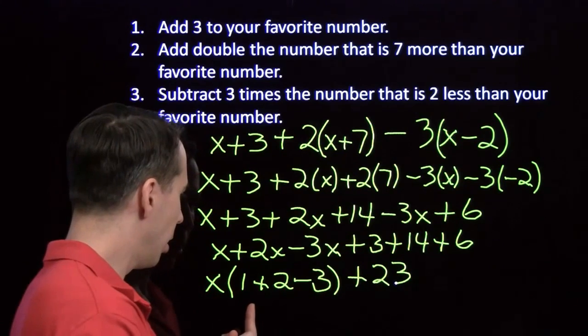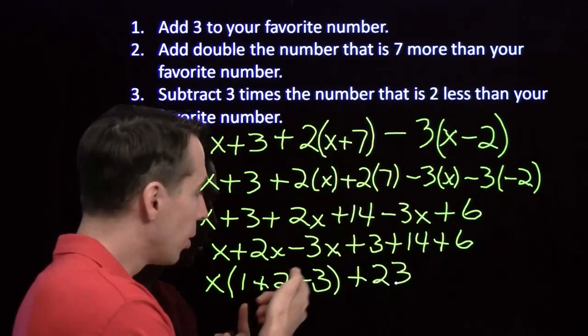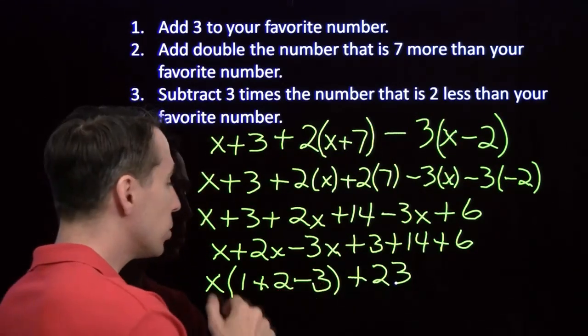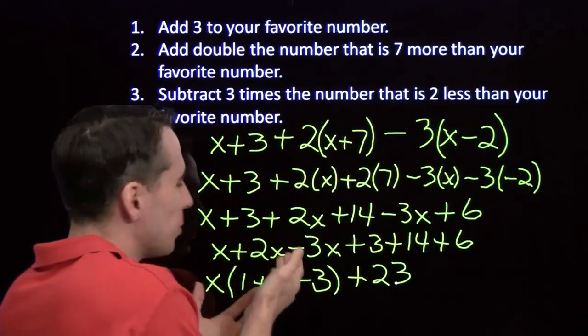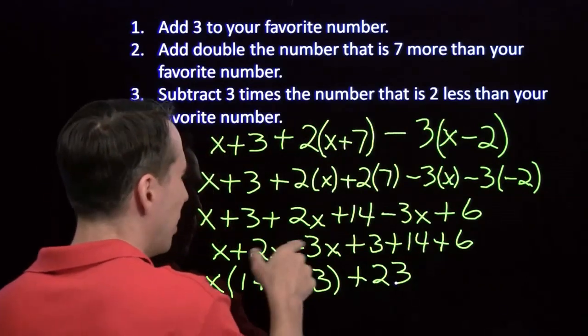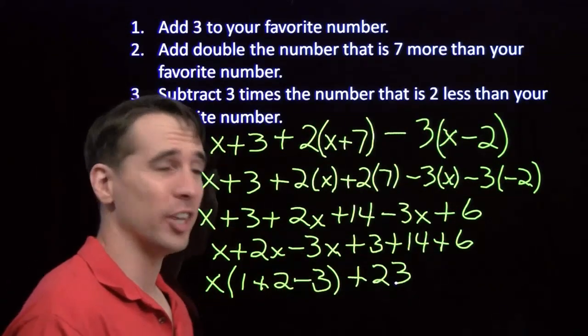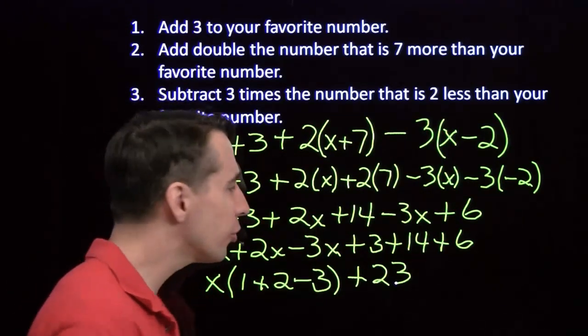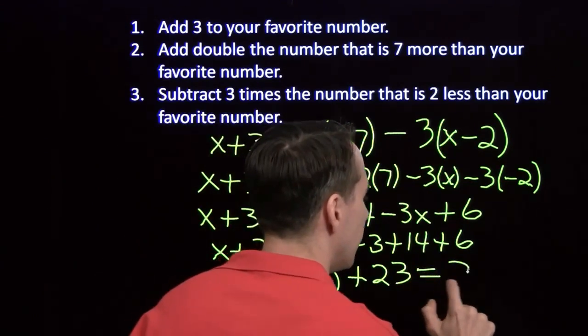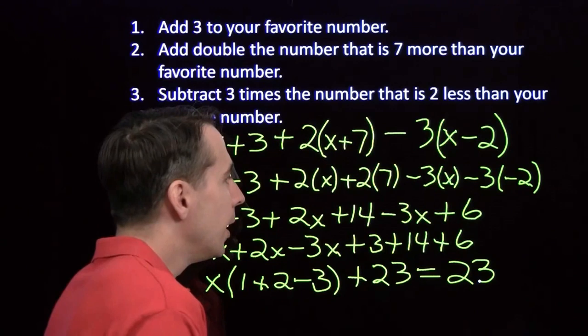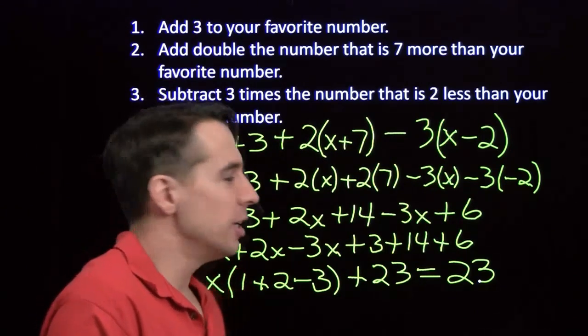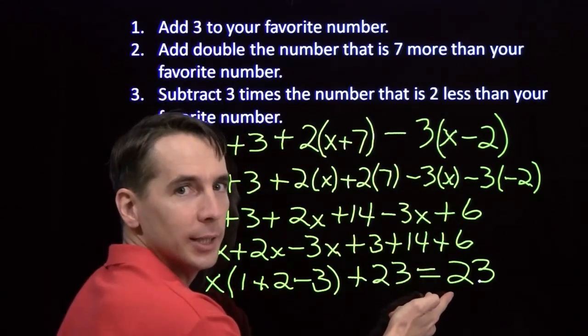But what about 1 plus 2 is 3. 3 minus 3 is 0. 0 times X, the X goes away. And we could have seen that up here too. It kind of makes sense, right? X plus 2X, that gives us 3X's minus 3X. That goes down to nothing. The X just cancels out. All the X's go away, and we're just left with 23. So it doesn't matter what our favorite number is. We always get 23 in the end.